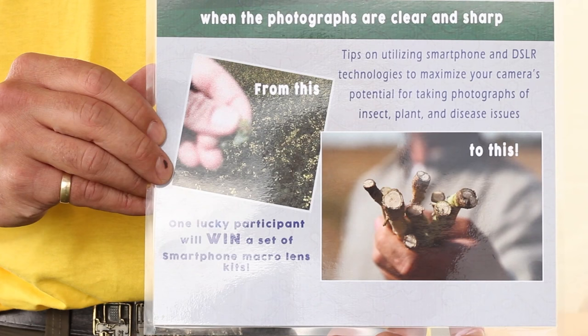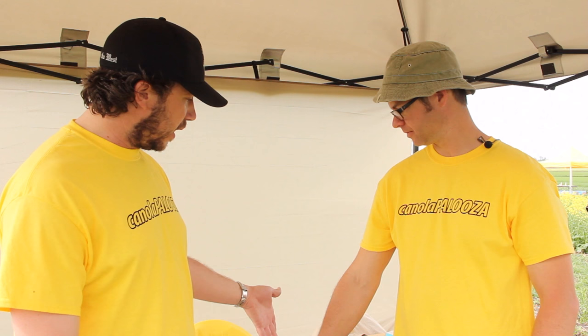As Canola Council agronomists and retail agronomists, we get pictures of problems in the field on a regular basis — something like this, with a very focused background and a very blurry foreground where the plant of concern is, with a question like, 'What is this?' And it's probably rude to say, 'Well it looks like a size 9.' So what we're trying to do here today is teach people how to use their smartphone to take better pictures of things they find in the field.